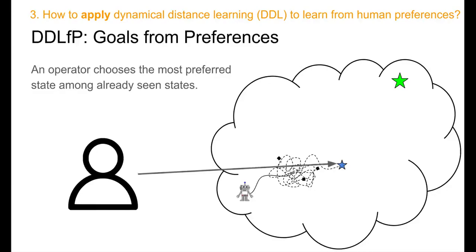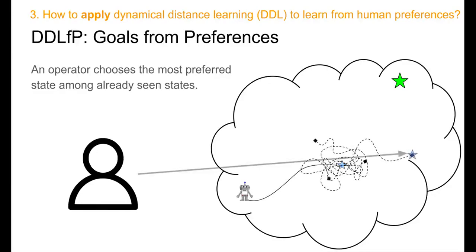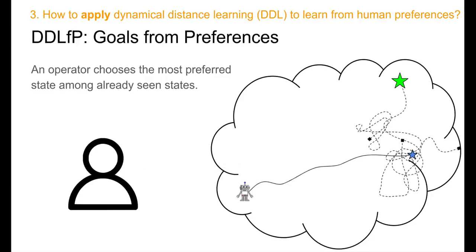Because the human guides the exploration, the agent always explores areas in the meaningful parts of the state space and makes progress towards the goal.